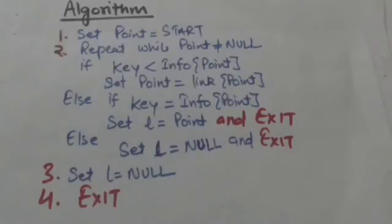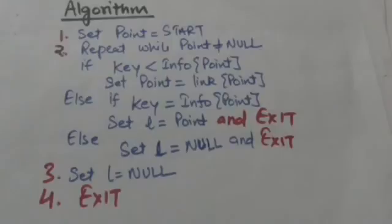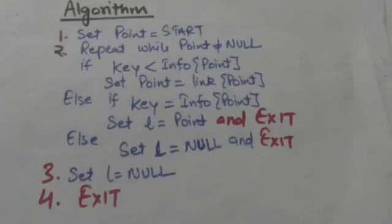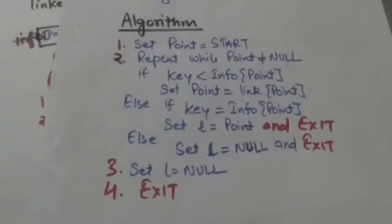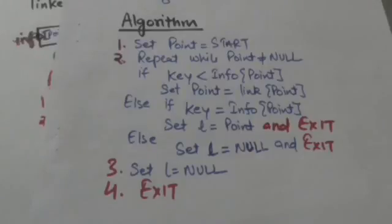If the content of the node is less than key, then the value of L will be set to null, which indicates that the value key does not exist in the linked list, and the algorithm stops. Similarly, if pointer variable point becomes equal to null, it means all nodes of the linked list have been checked and none of them contains the value key, so L will be set equal to null and the algorithm stops. Thank you very much.